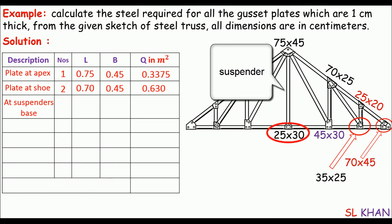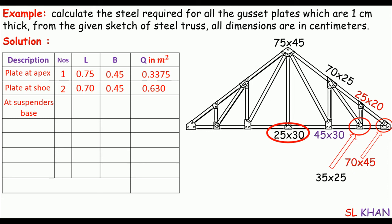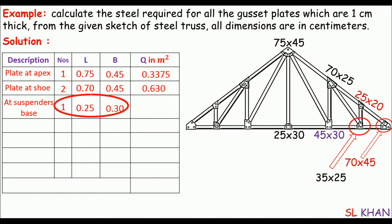Next is the plate at the suspender base — the suspender is the perpendicular member at the middle of the truss. There is only one such plate and its dimensions are 25×30 centimeters. Multiplying these gives its quantity.